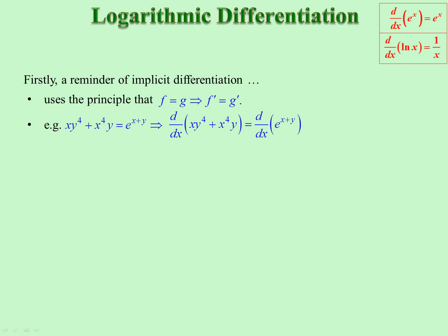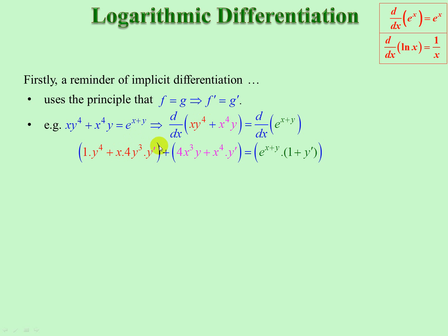A second example involving e to the x plus y. We differentiate using a product rule and a composite rule. For x times y to the 4: derivative of x times y to the 4 plus x times derivative of y to the 4, where that's 4y cubed times derivative of the inside. Notice it's easier to write y prime instead of dy by dx. Plus this one: derivative of x to the 4 is 4x cubed, times y, plus x to the 4 times y prime.